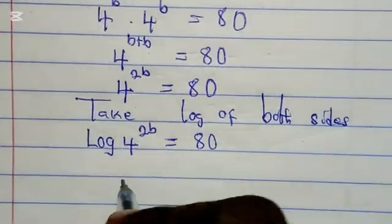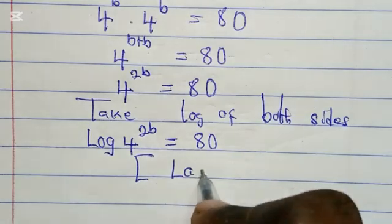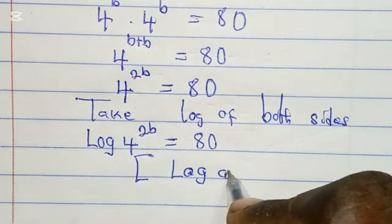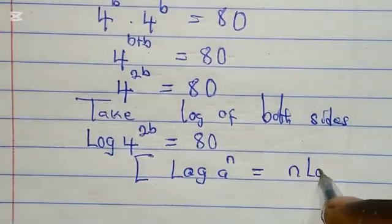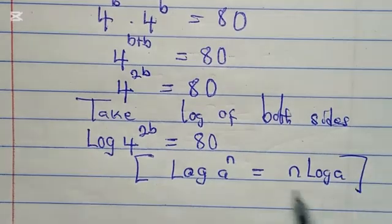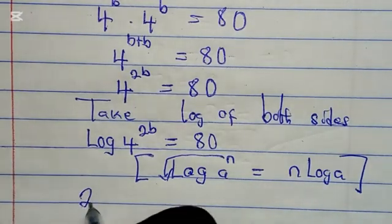Recalling the property of logarithms: when you have log(a^n), it equals n log a. The power comes to the side, so now you have 2b...